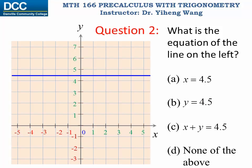Similarly, the answer to this question is b, y equals to 4.5. Again, any point on this horizontal line has y coordinate of 4.5, therefore automatically satisfies the equation. The x coordinate can be any real number, and it doesn't matter to this equation.